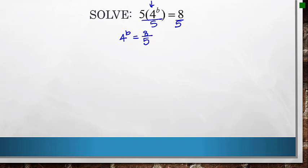Now I have that exponential piece isolated. So I look, can I write these as the same base? The answer is unfortunately no. I can write 4 as base 2 and 8 as base 2, but there's no way to write 5 as base 2. So I have to move on. I'm going to take the logarithms of both sides so I can get that b out of the exponent.